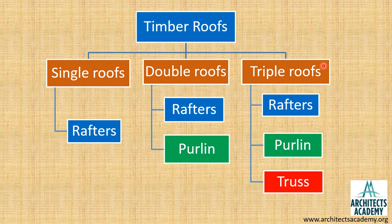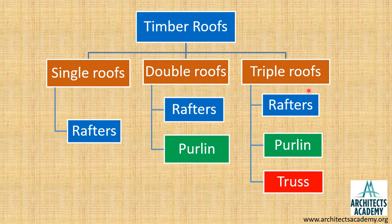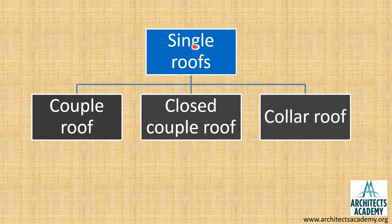Last time we had seen the classification of timber roofs based on the members used. Timber roofs are classified into single roofs, double roofs, and triple roofs. Single roofs consist of only rafters as the main member, double roofs consist of rafters and purlins, and triple roofs consist of rafters, purlins, and truss. Single roofs are classified into couple roof, closed couple roof, and collar roof.